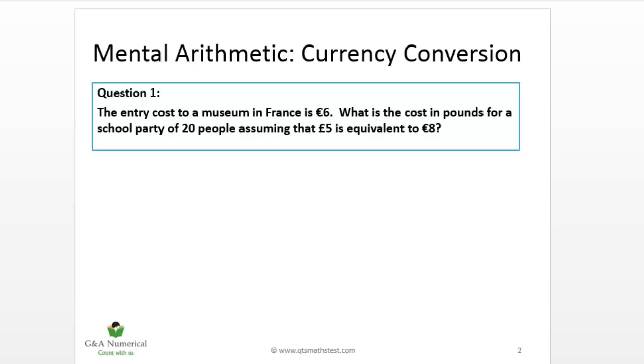So question one, we'll start with our mental arithmetic currency conversion question. This is a very typical type of question that you might be asked. We've got entry cost to a museum in France is 6 euros. Your job is to work out what is the cost in pounds for a school party of 20 people assuming that 5 pounds is equivalent to 8 euros.